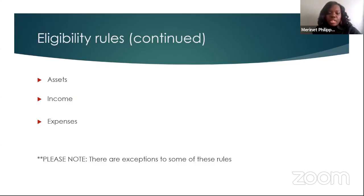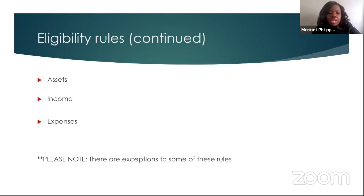Some of the expenses they take into consideration are your shelter expense, which is for your rent or your mortgage; any medical expenses more than $35 for an elderly or disabled household member; childcare expenses if you have cost of childcare when you need to work, seek work, or attend training for work; and also if you are court-ordered to pay child support. Those are expenses that you can get a deduction for. Please note that there are some exceptions to these rules.